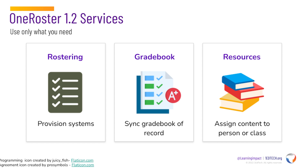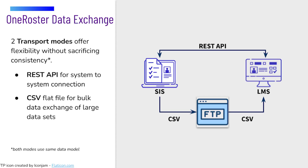In order to send that data around, we've defined two mechanics or transport modes. We have a secure REST API for system-to-system connection, as well as a CSV flat file exchange for bulk data outside of a direct system-to-system connection. Because these are both built on top of the same data model, institutions and suppliers are able to implement one or both based on their needs — you do not need to rob Peter to pay Paul.